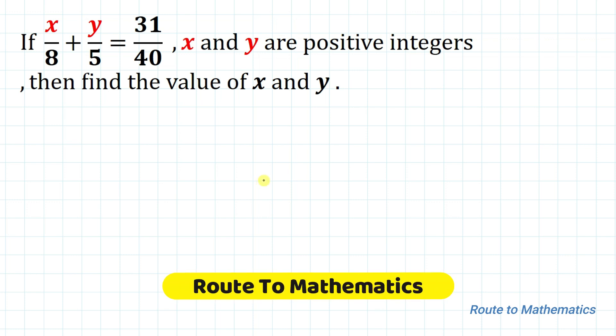Hello everyone, welcome to Root to Mathematics. In this video we are going to solve this interesting equation with two unknown variables. The given question is: if x/8 + y/5 = 31/40, and x and y are positive integers, then find the value of x and y.